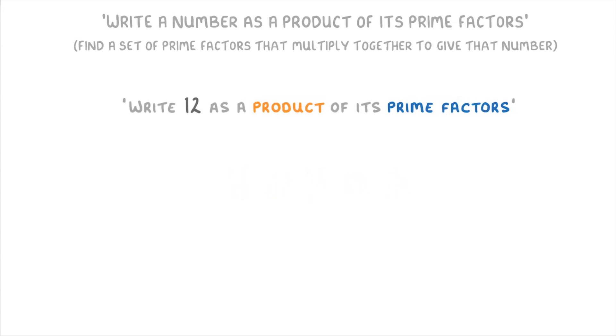Instead, we'd have to do 2 times 2 times 3, which are still all prime numbers, but now do multiply to give us 12.